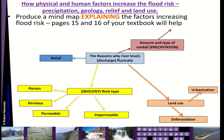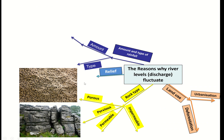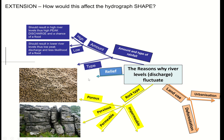For your tasks, you should produce a mind map like the one on the worksheet. Each factor needs a line going off with an explanation of how it can affect discharge levels. Think about hydrograph shape too — high amounts of rainfall mean high peak discharge and chance of a flood. Low amounts of rainfall mean lower peak discharge. If it's low rainfall your hydrograph would look flatter; if it's high rainfall you have a much higher peak and a shorter lag time.